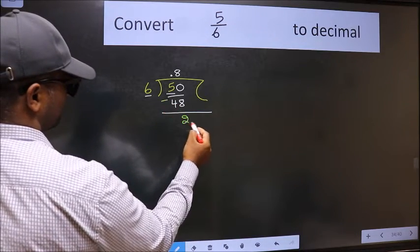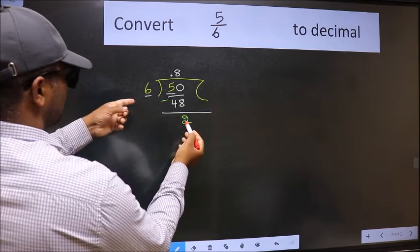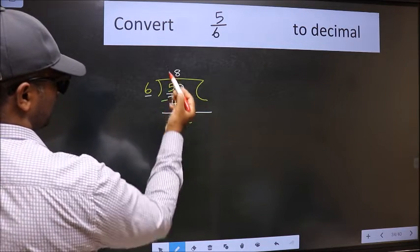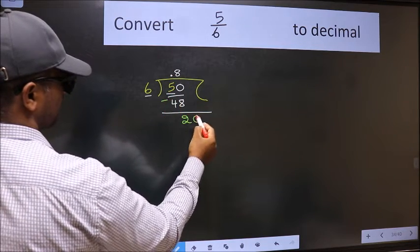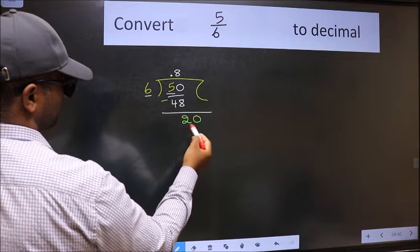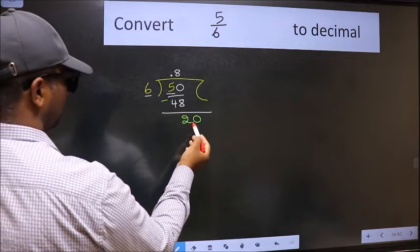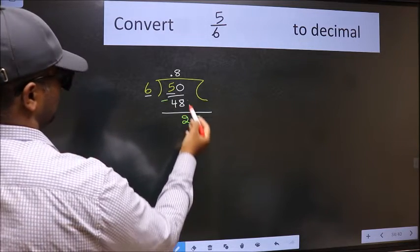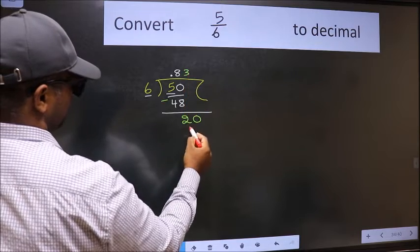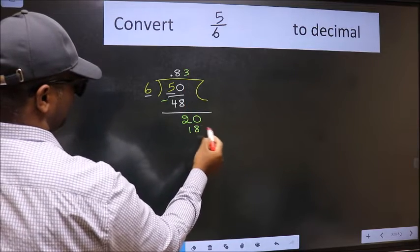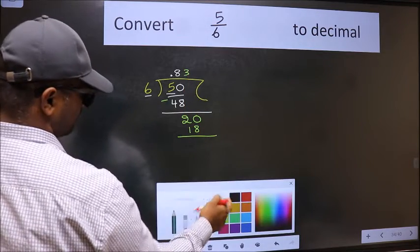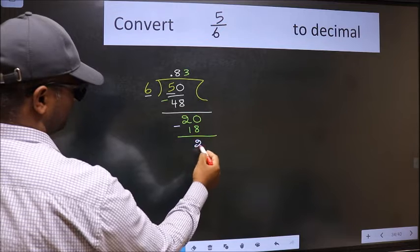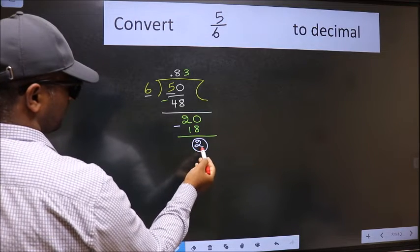2 is smaller than 6, and we already have the decimal, so directly take 0 — making it 20. A number close to 20 in the 6 times table is 6×3=18. Now we subtract and get 2 again.